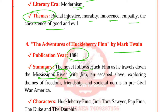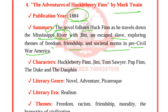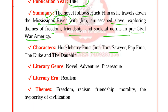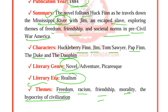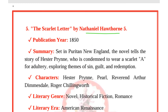The Scarlet Letter by Nathaniel Hawthorne was published in 1850. Set in Puritan New England, the novel tells the story of Hester Prynne, who is condemned to wear a scarlet letter 'A' for adultery, exploring themes of sin, guilt, and redemption. The symbol 'A' stands for adultery. Characters include Hester Prynne, Pearl, Reverend Arthur Dimmesdale, and Roger Chillingworth. It is an American Renaissance novel. Themes are sin, guilt, redemption, societal judgment, and individual versus society.